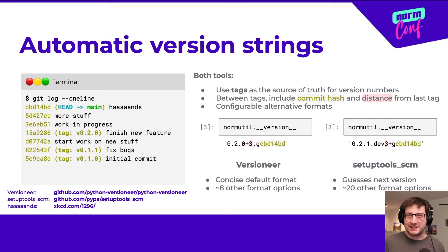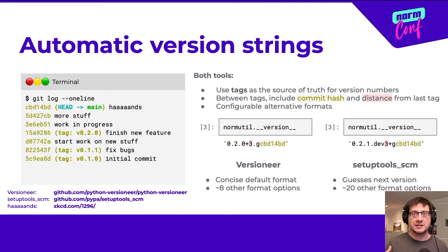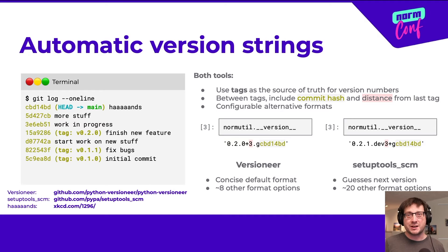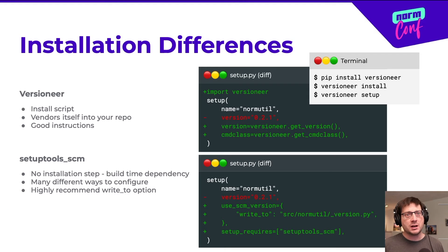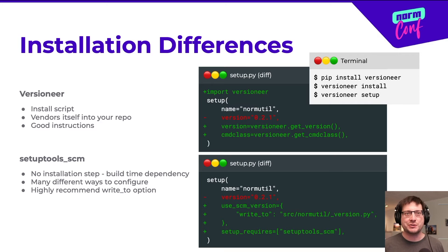The default format they use is slightly different. Versioneer is more concise — in this example it reads as three commits past version 0.2.0. Setuptools_scm is more verbose, so it reads as three commits in development toward version 0.2.1. It guesses what it thinks you're going to name the next version, not always correctly. If you don't like these behaviors, you can configure one of several other formats — versioneer has eight to choose from and setuptools_scm has even more.